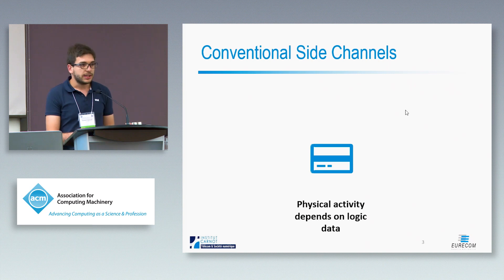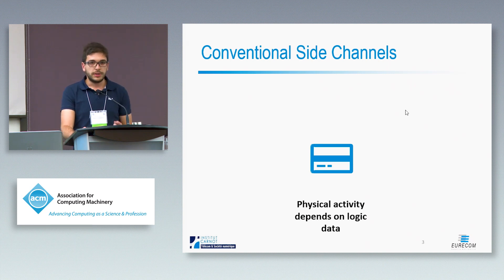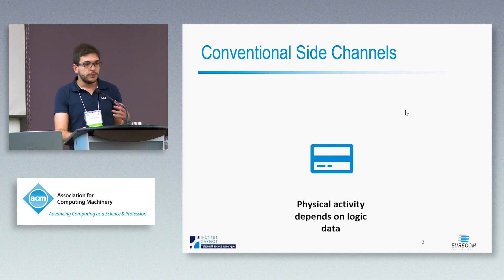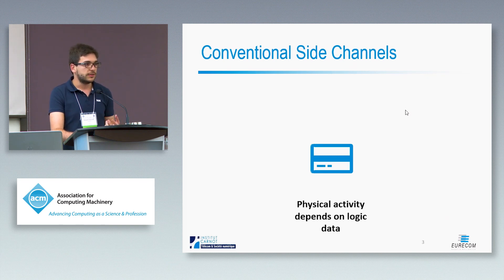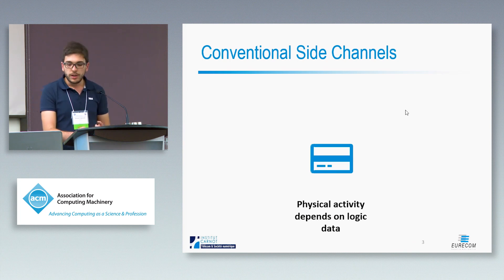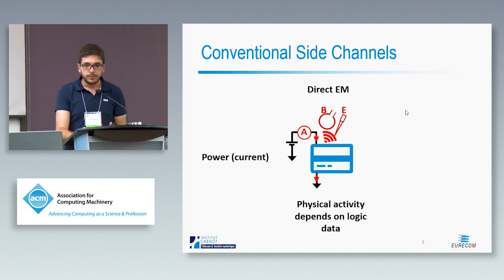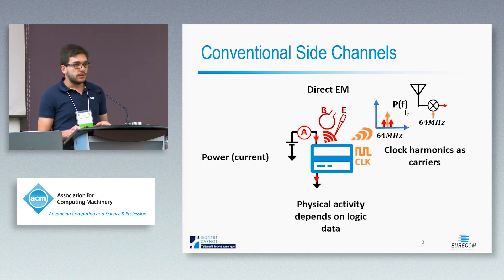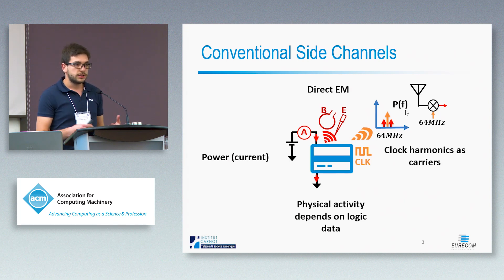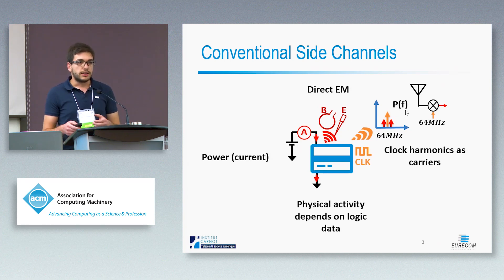One class of physical attacks are side channels. The root cause behind side channels is that when we perform some operation on a device, the physical implementation has an activity, and this physical activity depends on the logic data being processed, so we could measure it in several ways: the current or power consumption, the direct electromagnetic emissions from components on the device, or signals in the system such as the clock which may act as carriers modulated by this logic activity, so we could take a radio, tune it into the frequency of this carrier, and retrieve the information.